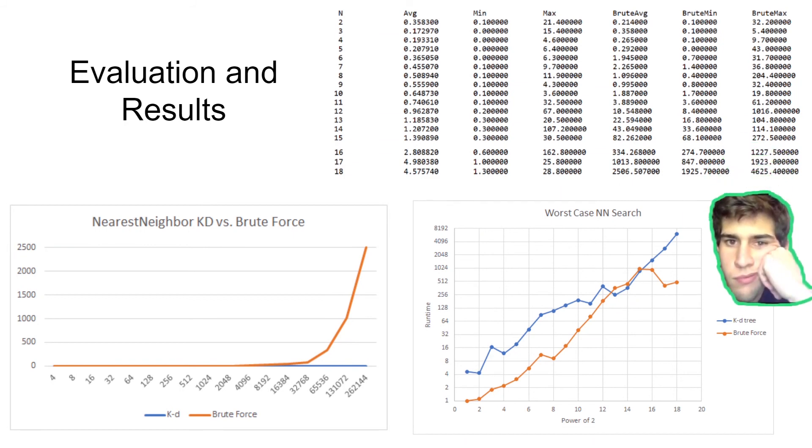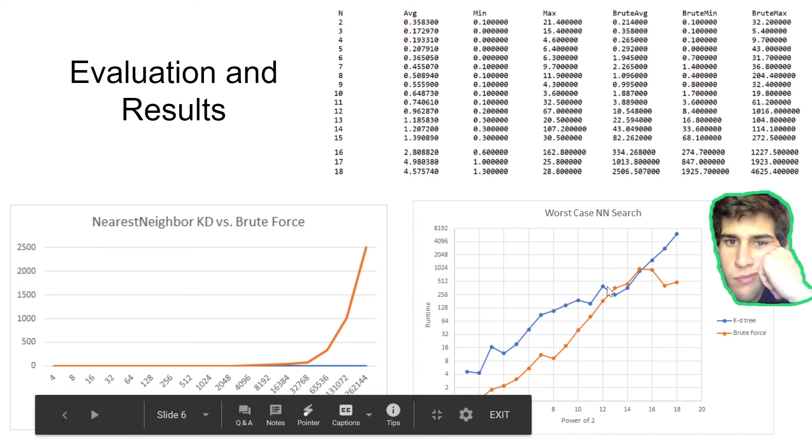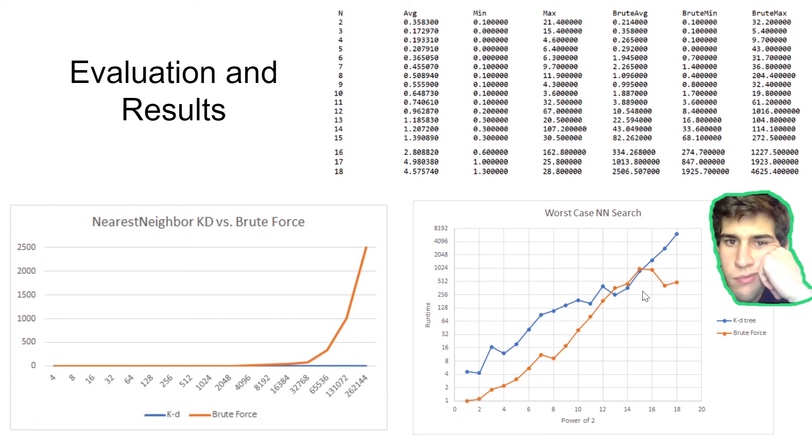I'm going to be talking about the evaluation and the results of our data. First off, this is the worst case of our KD-tree nearest neighbor query in the bottom right. As you can see, the KD-tree and the brute force time efficiency are very similar for the majority of the performance.